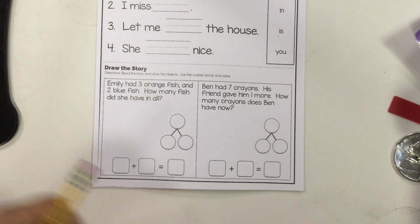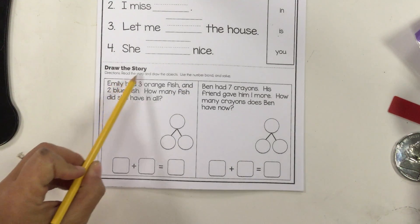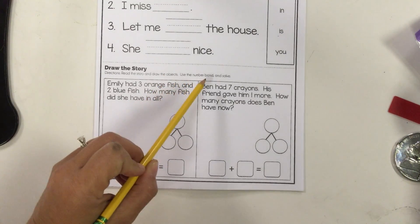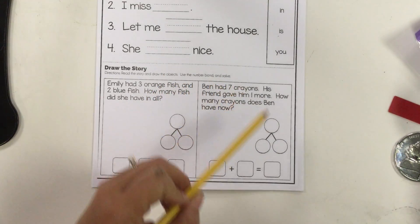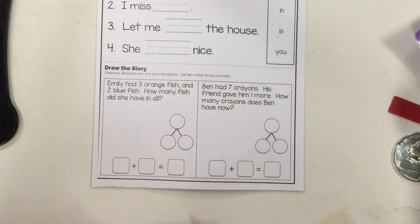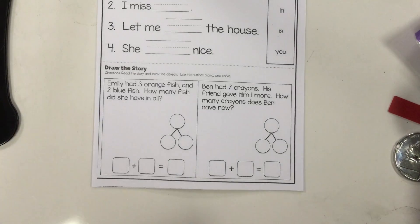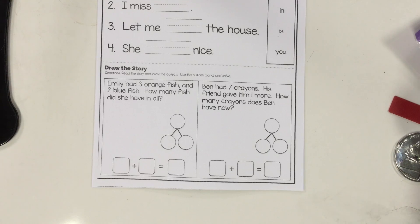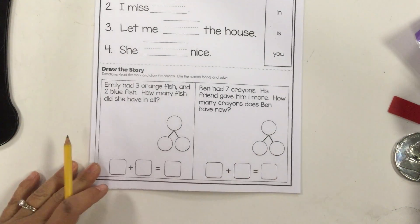The directions say read the story and draw the objects. Use the number bond and solve. So what you're going to do is read the word problem. I'll actually do the first one for you, and then I'll read the next word problem and you will fill out the rest.